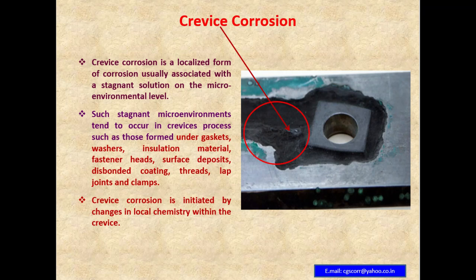Crevice corrosion is a localized form of corrosion usually associated with stagnant solution on the micro-environment level. Such stagnant micro-environments tend to occur in crevices formed under gaskets, washers, insulation material, fastener heads, surface deposits, disbonded coatings, threads, lap joints, and clamps.